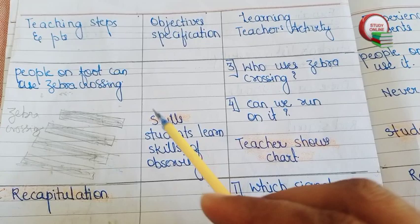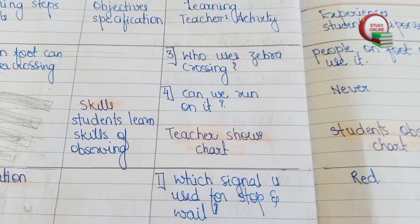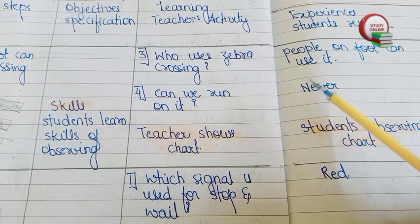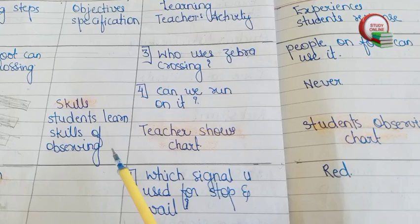Here you can see I have drawn a diagram of a zebra crossing. The question related to that which we have to ask students is: who uses the zebra crossing? The expected answer is pedestrians. Can we run on it? Never. And here you can see the blackboard work — we can also draw the diagram of a zebra crossing on the blackboard.